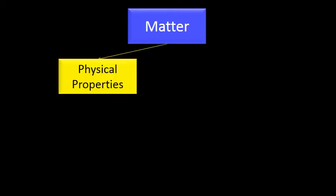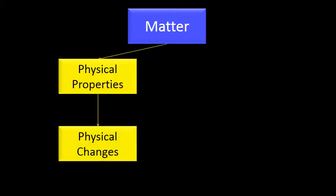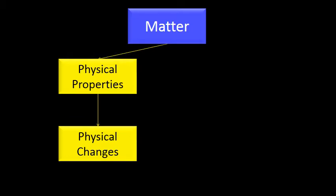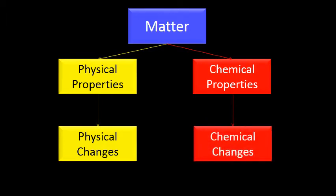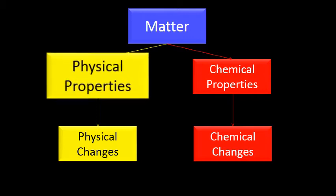Matter can be classified. Scientists classify everything because it helps us understand the world around us. So we're going to classify matter into its physical properties and its physical changes. And then in the next video, I'm going to talk about matter's chemical properties, how we classify it by its chemical properties, and what chemical changes are. And the chemical changes part is really important because that's where the real heart of chemistry lies.